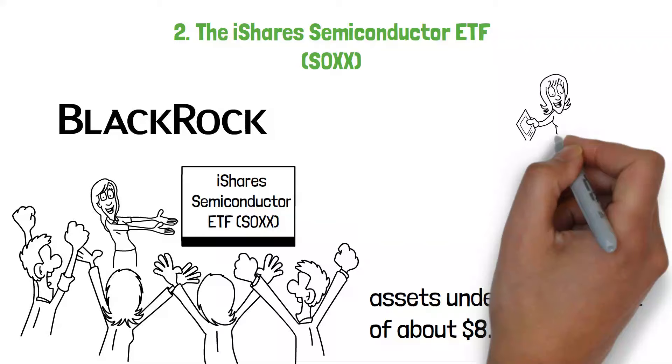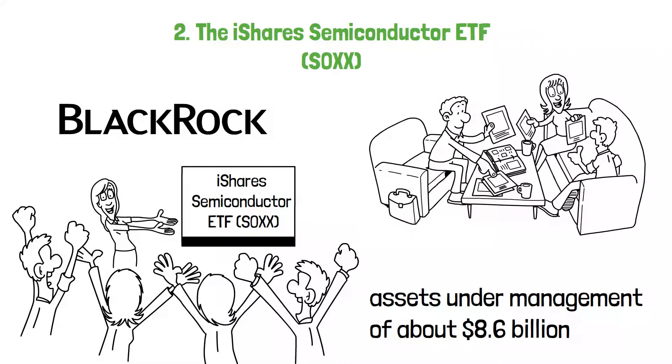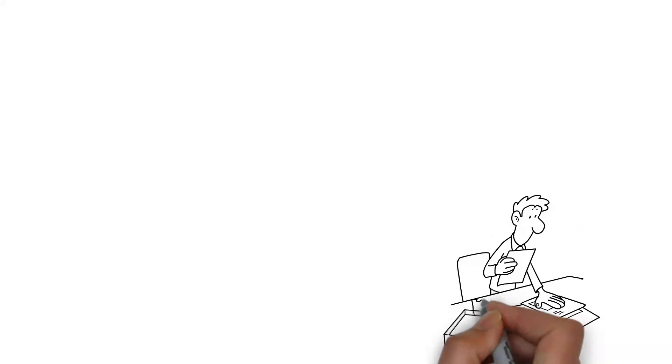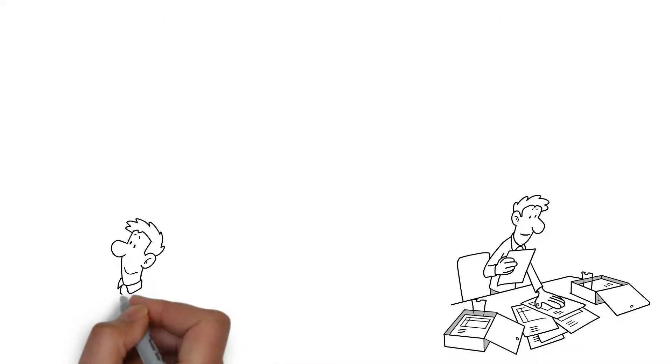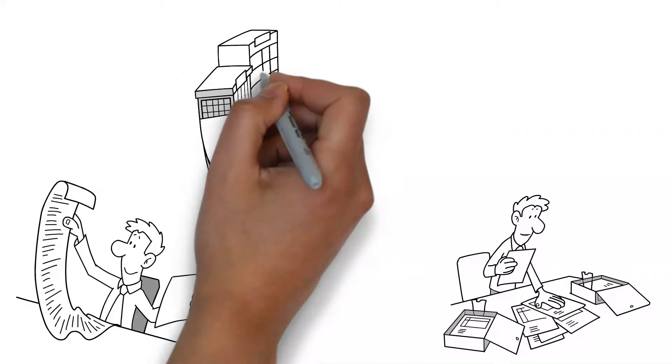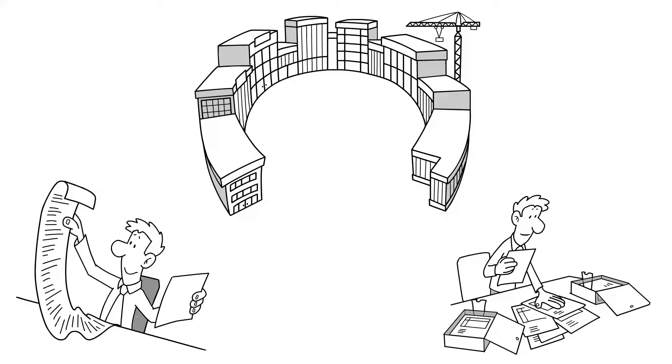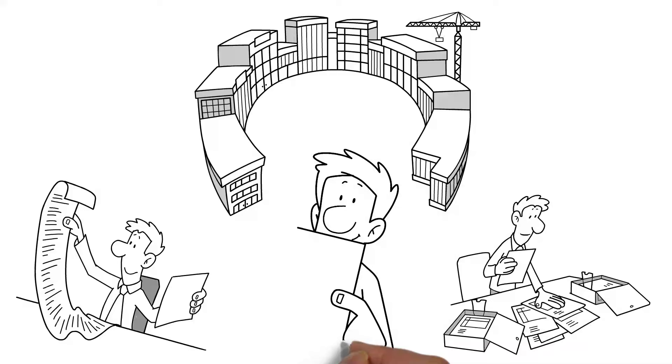SOXX gives investors exposure to the booming semiconductor industry, which is crucial to several technology-driven sectors. SOXX especially targets the semiconductor industry by monitoring the ICE Semiconductor Index. This index covers 30 of the biggest U.S.-listed semiconductor businesses, covering a wide range of organizations engaged in the design, production, and distribution of semiconductors.